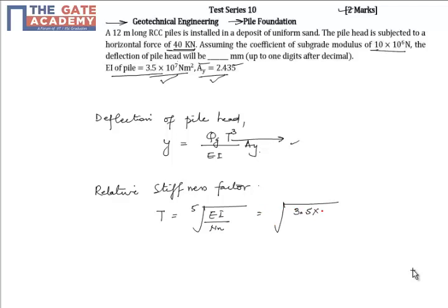EI is given by 3.5×10^7 Nm^2 and Nh is given as subgrade modulus 10×10^6 N/m^3, which gives the value to be 1.285 meter.